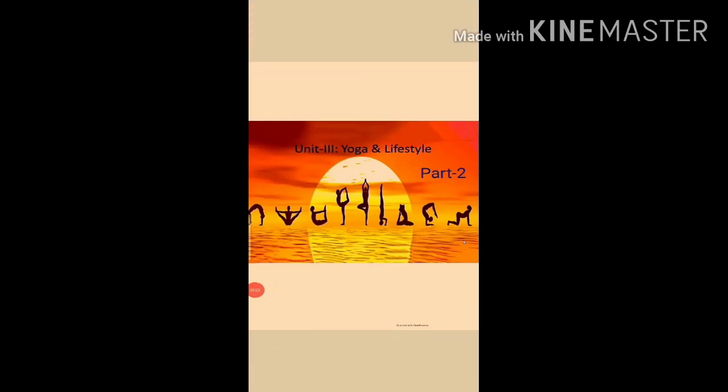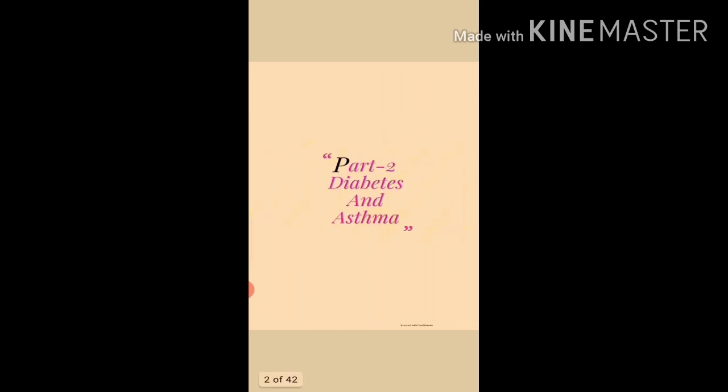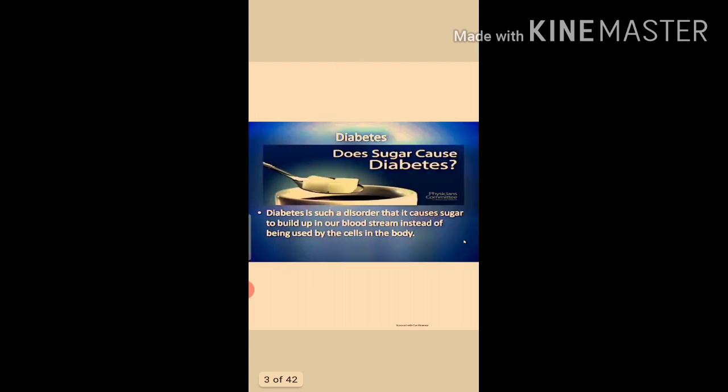Good morning dear students. Today we will discuss Chapter 3, Yoga and Lifestyle, Part 2. This is the second video lecture of this unit. Today we will discuss about diabetes and asthma. First is diabetes. Diabetes is a disorder that causes sugar to build up in our bloodstream instead of being used by the cells in the body. Diabetes is not a newly born disease.